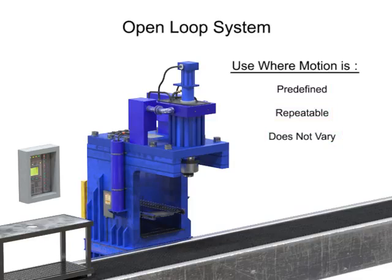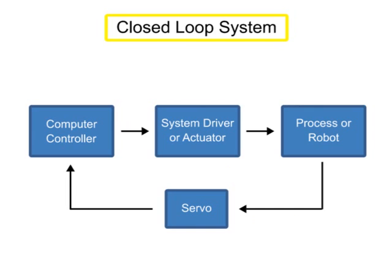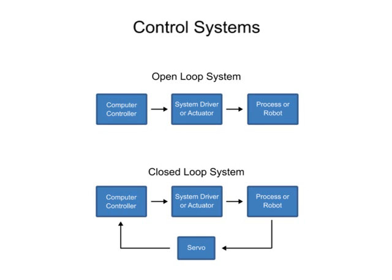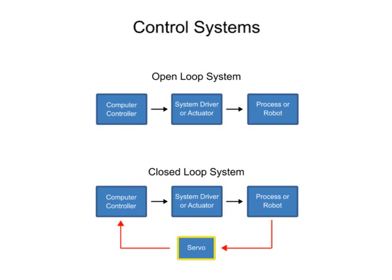The second type of control system is called closed-loop control or servo control. A servo is a device that uses error-sensing feedback to control the motion of another device. The primary difference in an open versus closed-loop system is the addition of a feedback loop that allows the controller to make adjustments to the robot.